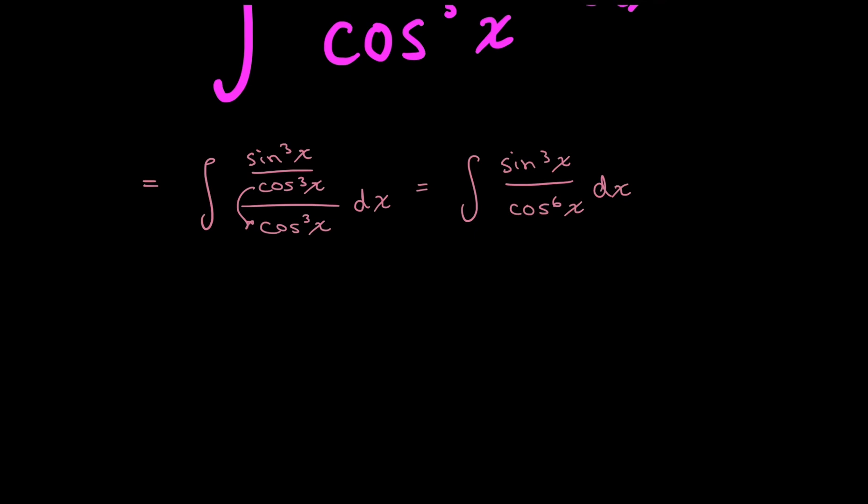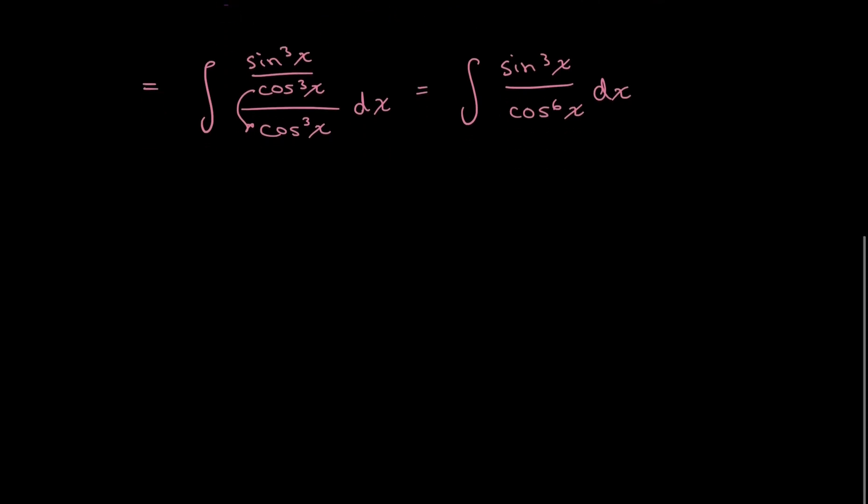So now what? Now I kind of want to set this up to do a u substitution. And it might not be the most obvious thing to do, but what I can do is I can take out one of those copies of sines so that I have sine squared x here in the numerator over cosine to the power of 6x times that one copy of sine that I just took out, dx.